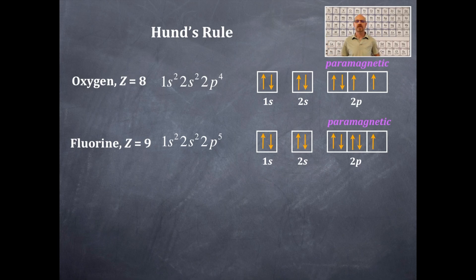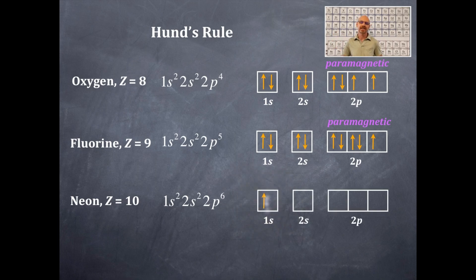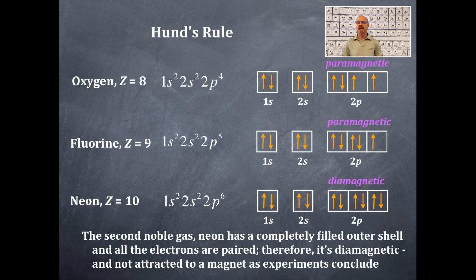The last element is neon, Z = 10. The electron configuration is 1s², 2s², 2p⁶. All orbitals are completely filled with paired electrons — up and down in every box. Because all electrons are paired, neon is diamagnetic and not attracted to a magnetic field. Neon has a completely filled outer shell; experiments verify it is diamagnetic.